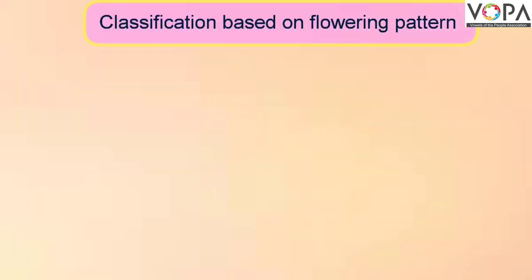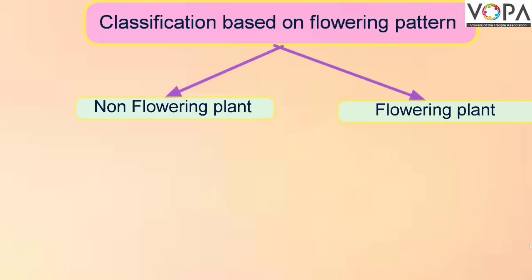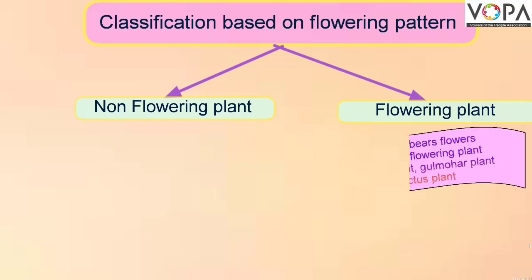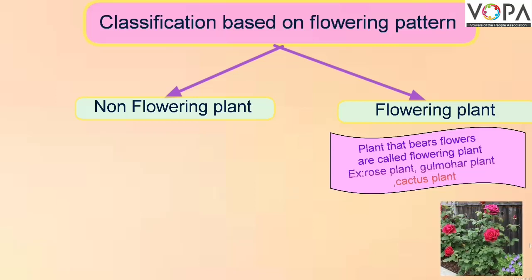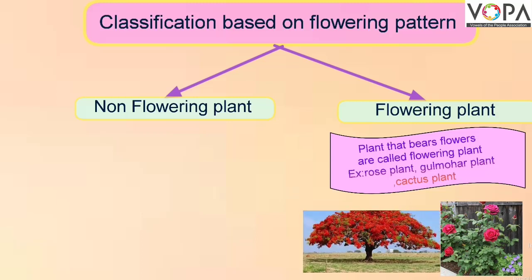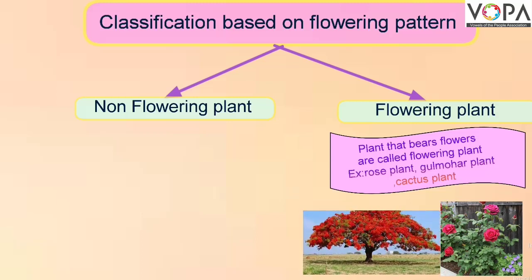Based on flowering pattern, plants are classified into two classes: flowering plants and non-flowering plants. Plants that bear flowers are called flowering plants. For example: rose plant, gulmohar plant, cactus plant, etc.